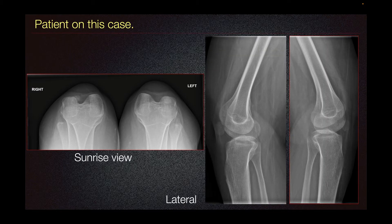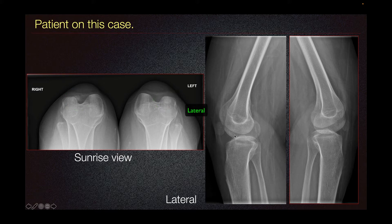The patient in this case presented with this radiograph. Here on our sunrise view, we can see a hypoplastic patella bilaterally, deviated to the lateral side. Here on our lateral view, we can again see this hypoplastic patella, consistent with the history of nail patella syndrome.